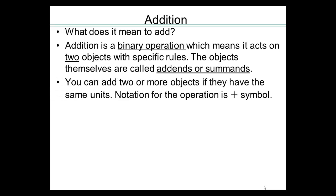You can add two or more objects if they have the same units. For example, two apples plus four apples will give me six apples. I can also add two apples plus four apples plus five apples, and that would be six plus five — eleven apples. So apples is the unit in this case. We denote addition by the plus sign, which is referred to as the addition symbol.